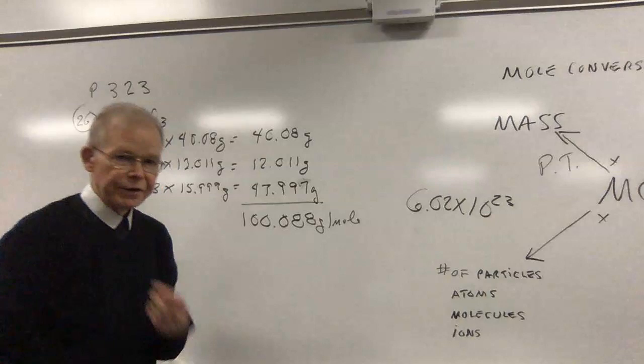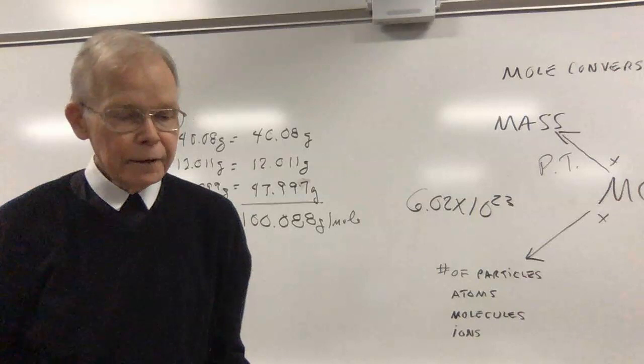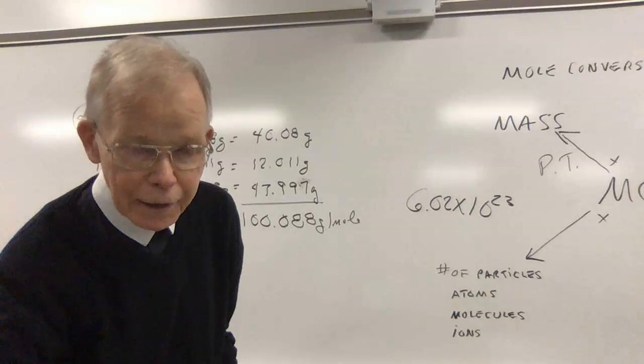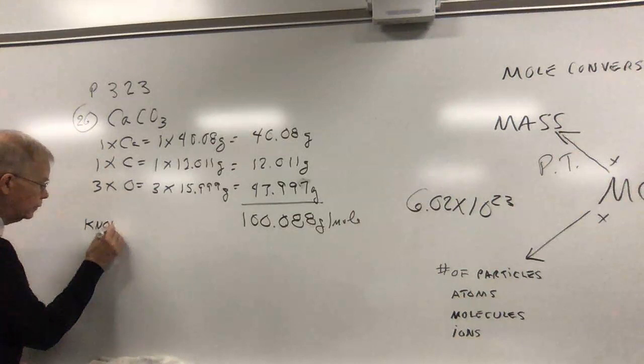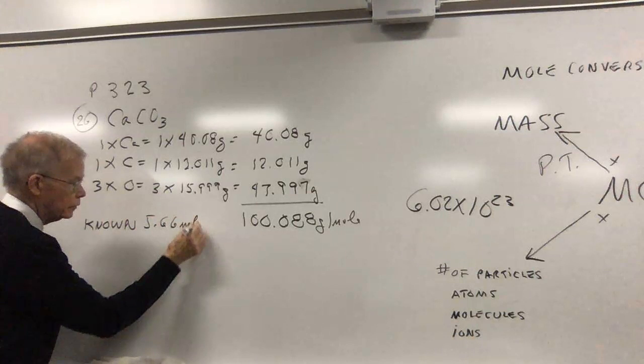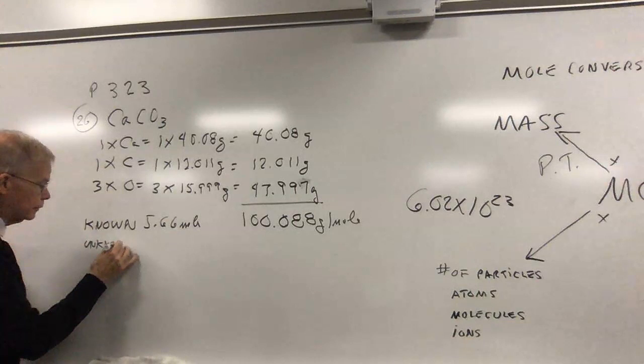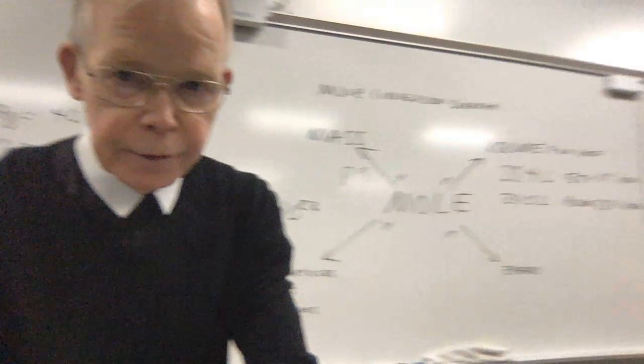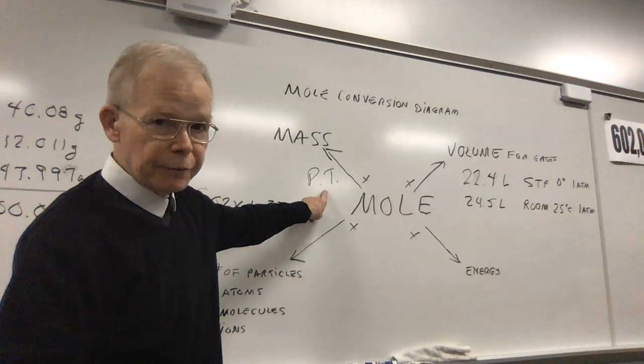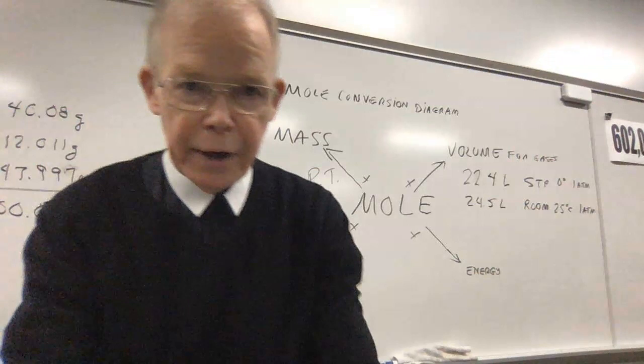This is what one mole of calcium carbonate weighs, so I'll use that to help in my calculation. They give us the quantity of calcium carbonate in terms of moles - the problem says 5.66 moles. So my known is the 5.66 moles of CaCO3. My unknown, what I'm looking for, is the mass of that quantity of moles. So if I look at my diagram, they give me moles, I want to go to mass. I've looked up all the information on the periodic table. I'm going out in my diagram, I'm just going to multiply.